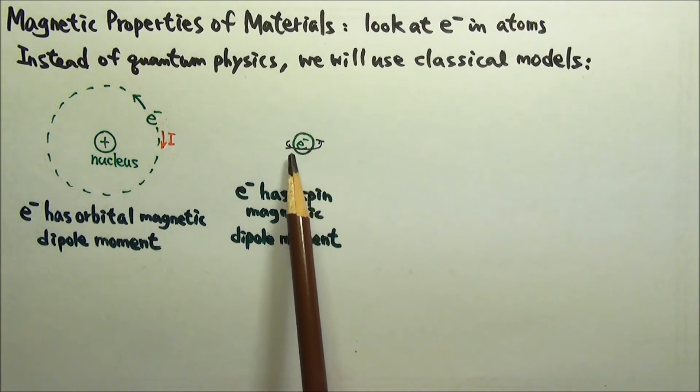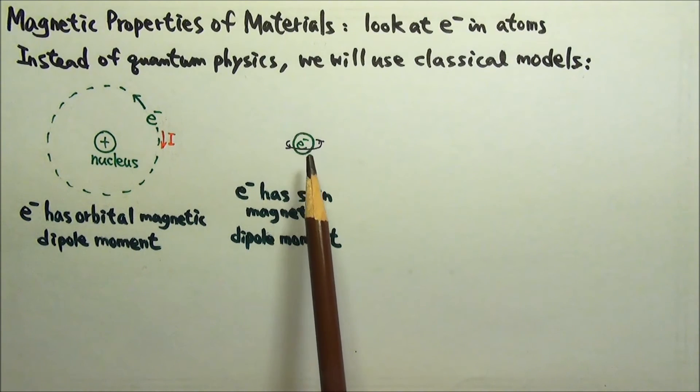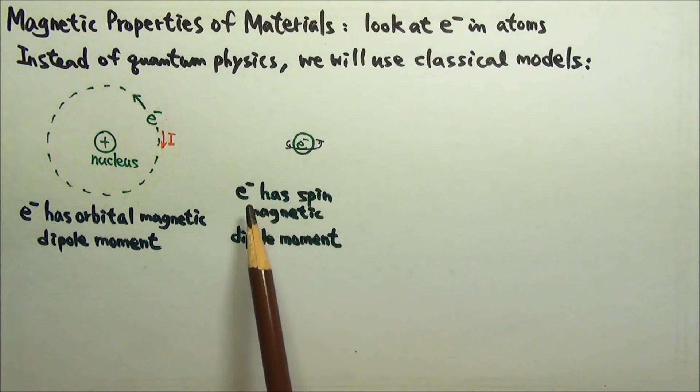An electron also spins. A spinning electron means the negative charges are whirling around, so an electron also has a spin magnetic dipole moment.